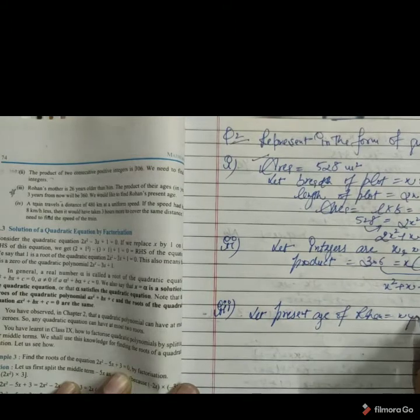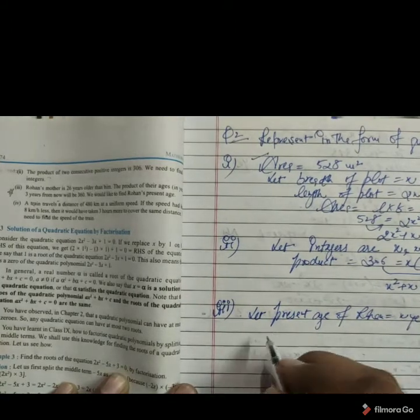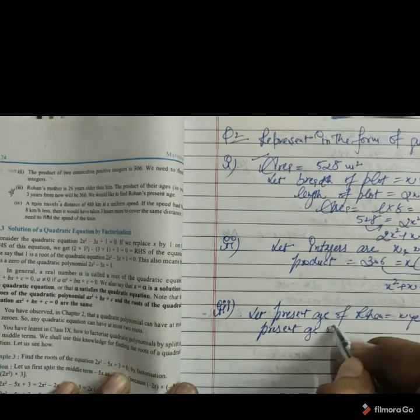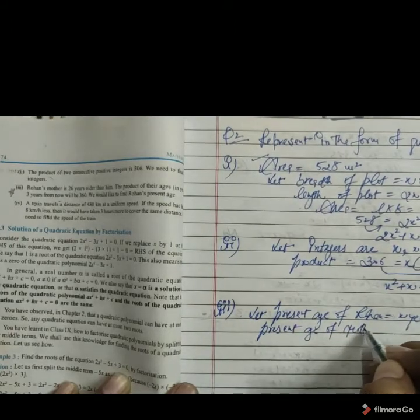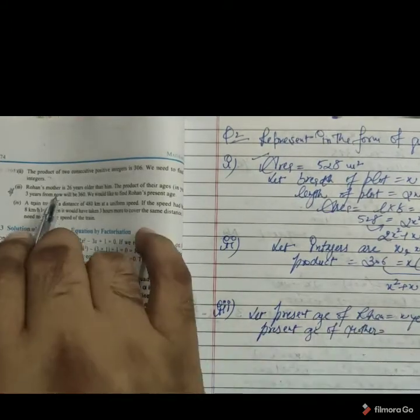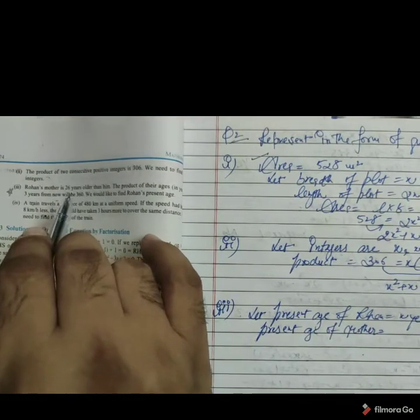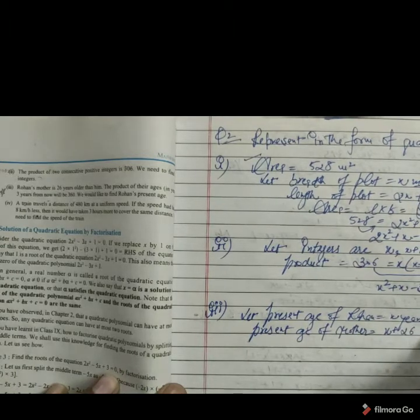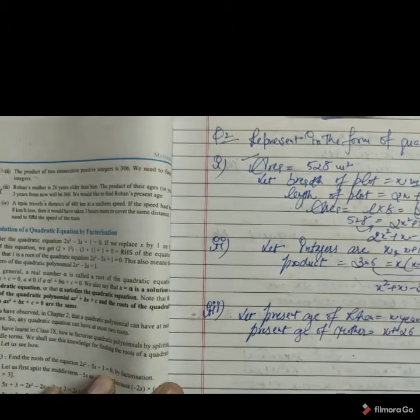Let present age of Rohan we are taking here x years. And the present age of mother, as it is given 26 year older. Older means extra in age, means bigger in age. So we have to add x plus 26 years.